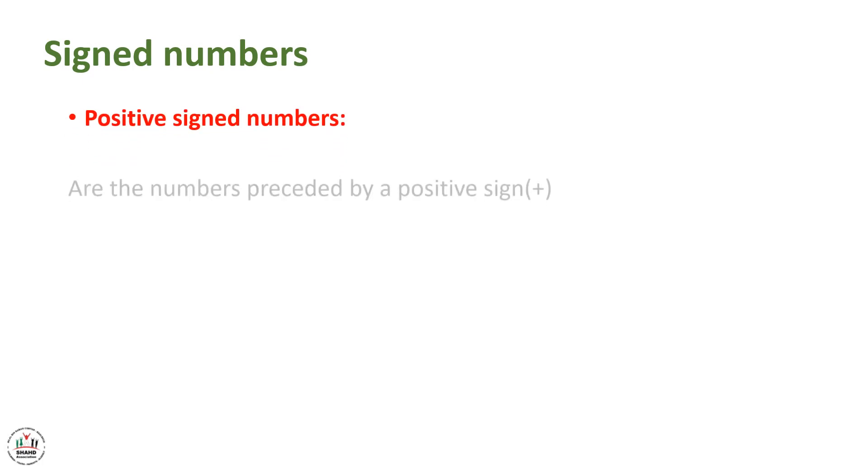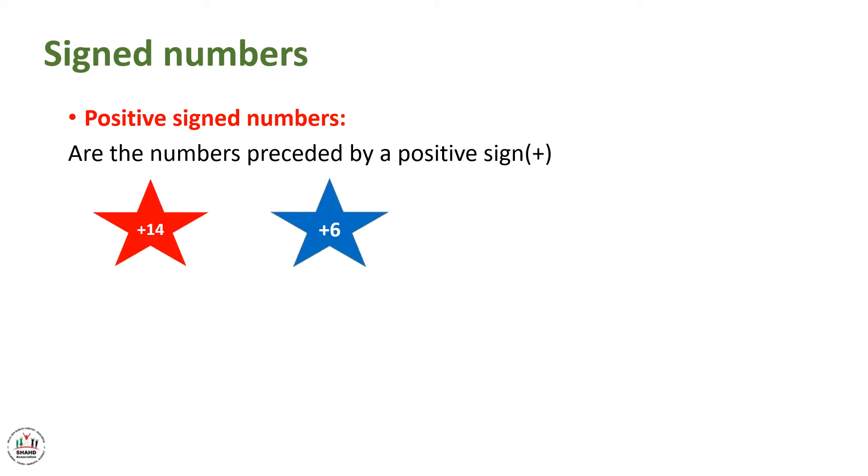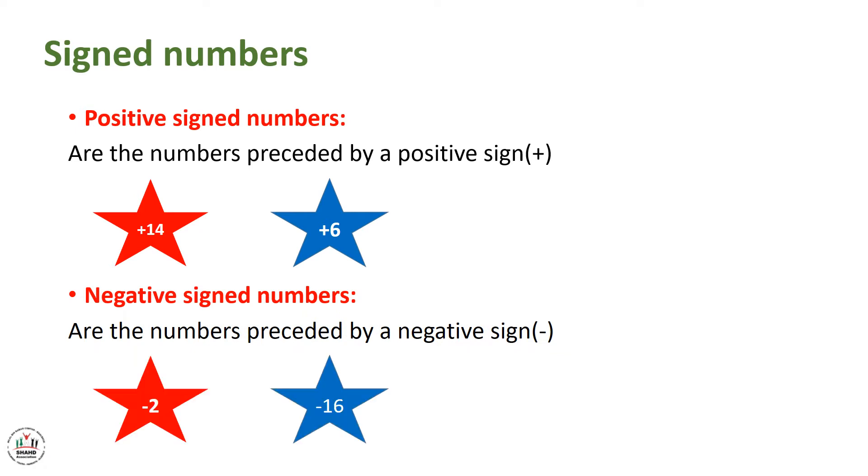So now, let's see what's a positive signed number. Positive signed numbers are the numbers preceded by a positive sign, like plus 14 and plus 6. The negative signed numbers are the numbers preceded by a negative sign, like minus 2 and minus 16.